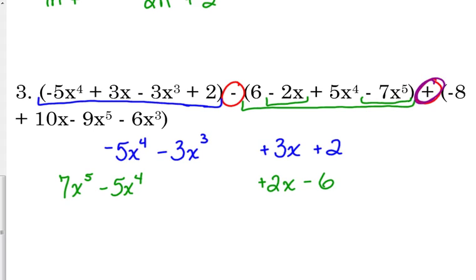The last one is addition, so I'm not changing any signs, I'm just going to fix my order. Negative 9x to the 5th, I don't see any to the 4th. I've got negative 6x cubed, no squares, plus 10x, and a negative 8.